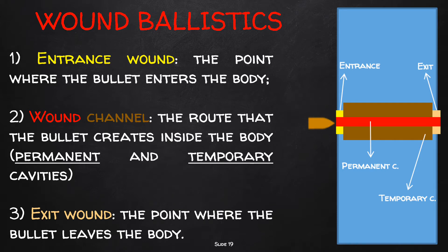The first goal for the forensic pathologist dealing with a gunshot wound is to distinguish between entrance and exit wounds. In most cases, this evaluation is not difficult thanks to specific wound findings and morphologies. The entrance is the point where the bullet enters the body, and the exit is the point where it exits — though the bullet does not necessarily exit and can be retained within the body. Between entrance and exit wounds there must be a connection called the wound channel, which represents the permanent and temporary cavity.